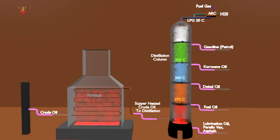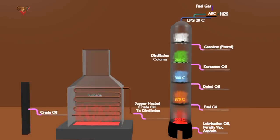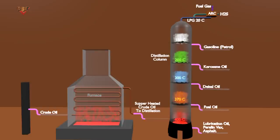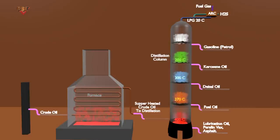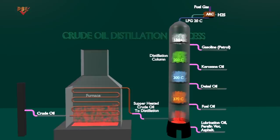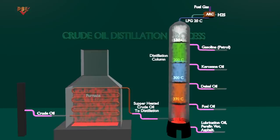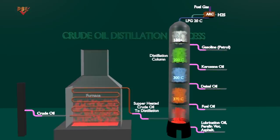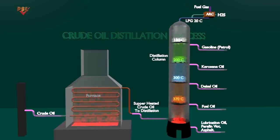The yield from a distillation tower refers to the relative percentage of each of the separated components, known as product streams. Products from the distillation tower range from gases at the top to very heavy, viscous liquids at the bottom. In all cases, these product streams are still considered unfinished and require further processing to become useful products.